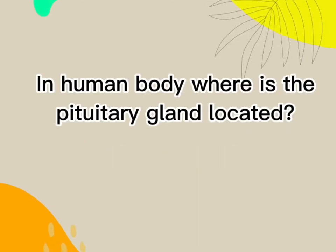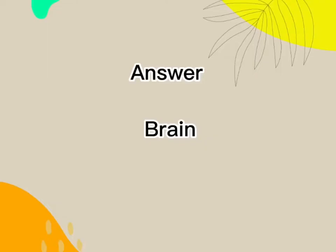In the human body, where is the pituitary gland located? Answer: Brain.